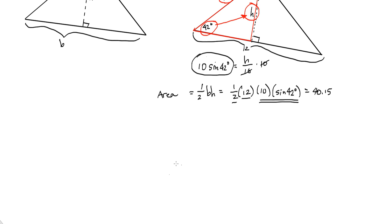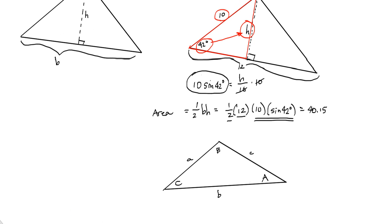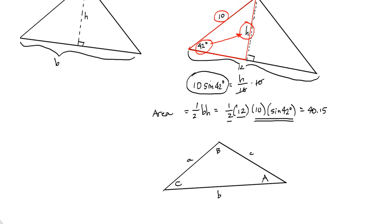If I've got a triangle, there's a triangle. Let me label some things. Let's call this side A, side B, side C, my opposite angles, capital A, capital C, capital B. I can find the area of any triangle. Now I want you to look back at this original one here. What did we use?